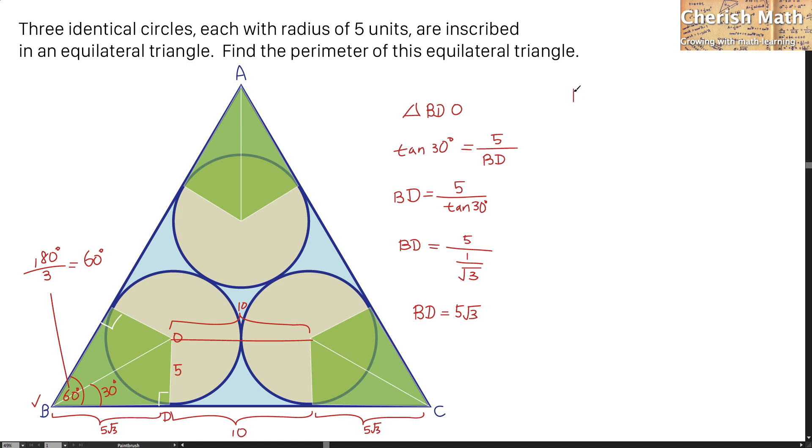I can now work out what is the length of BC by simply adding up 5 multiplied by square root of 3 plus 10 plus 5 times square root of 3. Let me make it simpler. That would be 10 plus 10 times square root of 3.